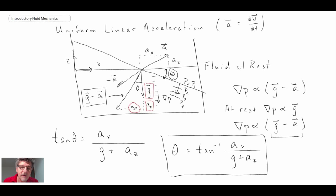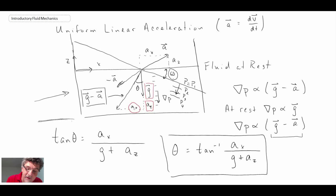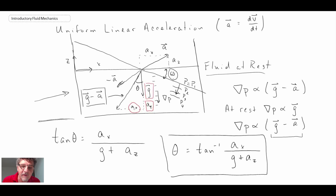We're going to take a look at an example problem in the next segment. I should note that my container drawing was not exactly horizontal — it's supposed to be horizontal, representing the fluid at rest with a flat free surface, so I apologize for that. What we're going to do next is solve an example problem using this equation for a container undergoing uniform linear acceleration.